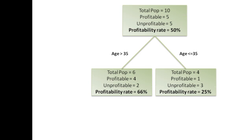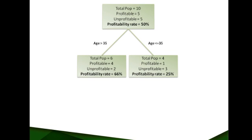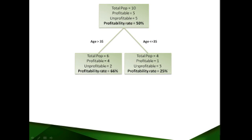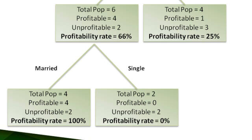Now, let us see if we can further segment this population into smaller segments, some of which have an even higher profitability. We will segment this population of people over 35 by the marital status variable. That is, whether a person is single or married. The population is segmented into two separate groups, one comprising of married people and the other made up of single people.